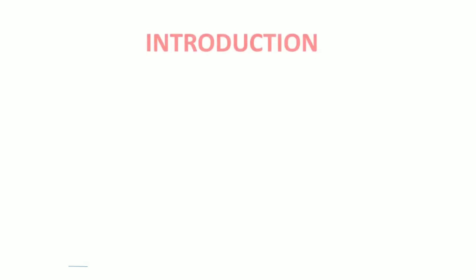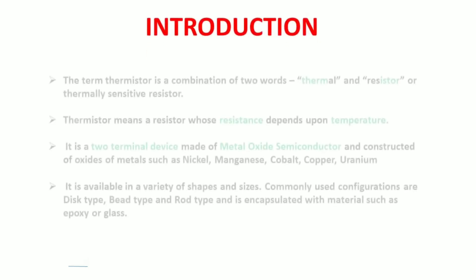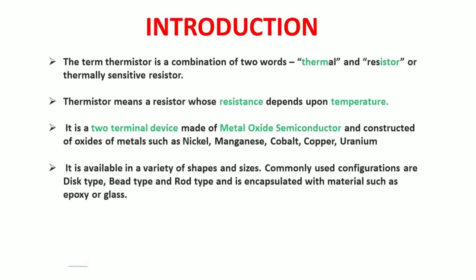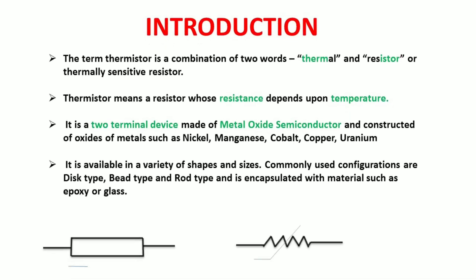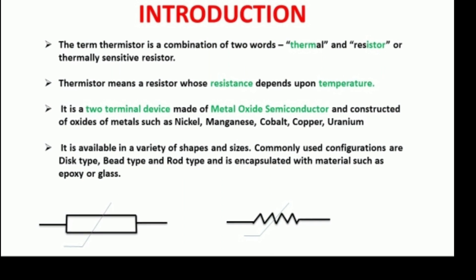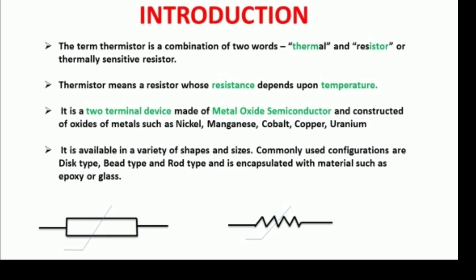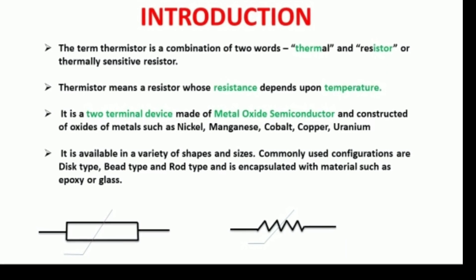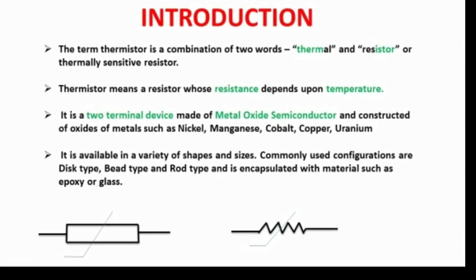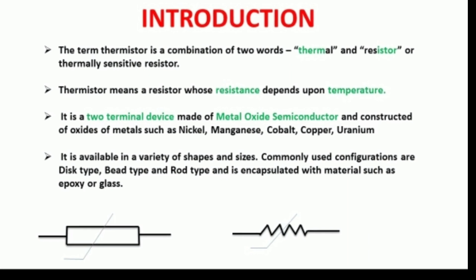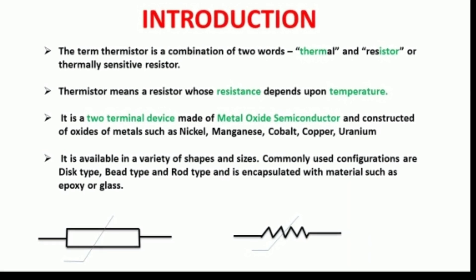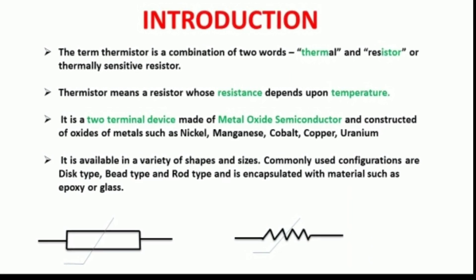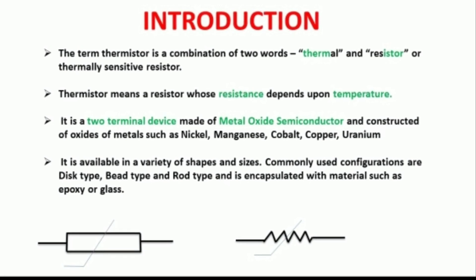Moving on to the next slide, that is introduction. The word thermistor is made of two words: thermal and resistor, which means resistor whose resistance depends upon temperature. It is constructed of oxides of metal like nickel, manganese, cobalt, etc. They are available in different shapes and sizes and are encapsulated with glass or epoxy. So here we can see the symbol of thermistors.